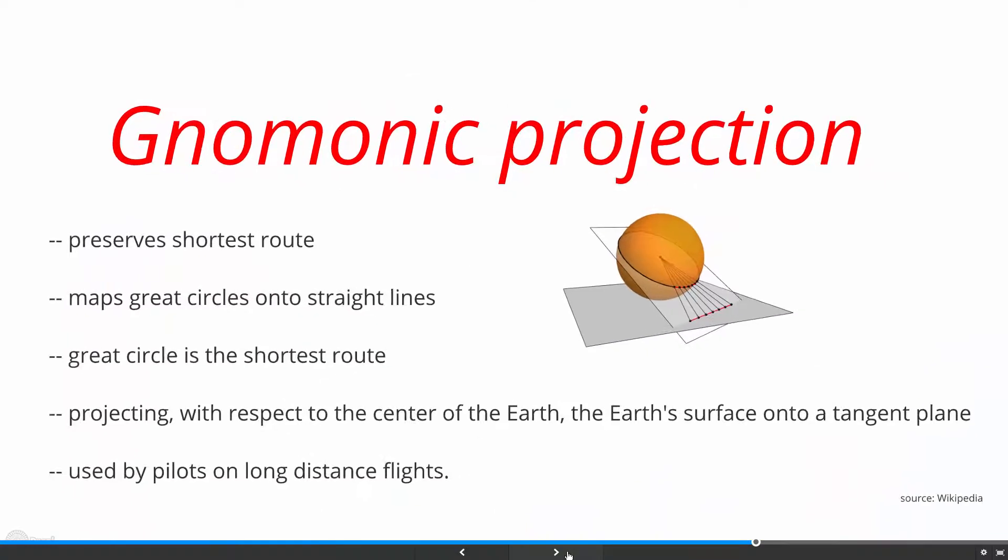The second kind of map is called Gnomonic projection, which preserves the shortest route. When we talk about the shortest route on a sphere, it involves the concept of a great circle. A great circle divides the sphere into two equal hemispheres.